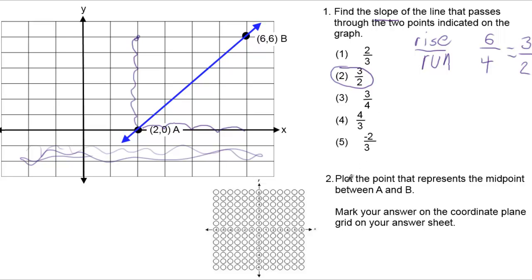Alright, the second part: Plot the point that represents the midpoint between A and B. Mark your answer on the coordinate plane grid on your answer sheet. Okay, again, there might be a way to calculate it, but I think it's fastest just to count again. You can count.